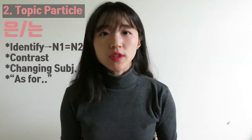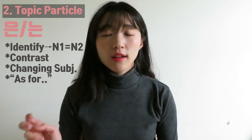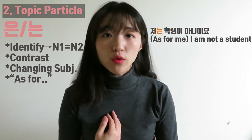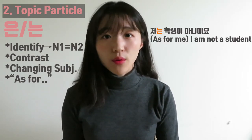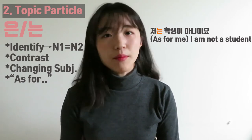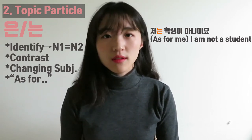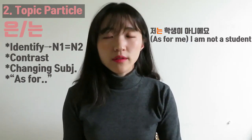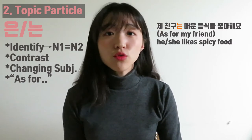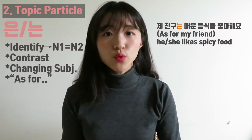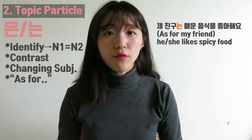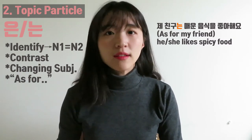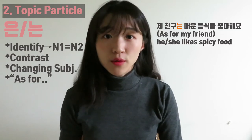The fourth function of 은/는 is 'as for.' For example, 저는 학생이 아니에요 — as for me, I am not a student. Or, 친구는 매운 음식을 좋아해요 — as for my friend, my friend likes spicy food.